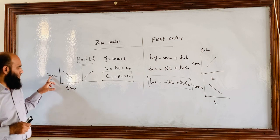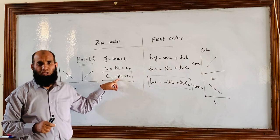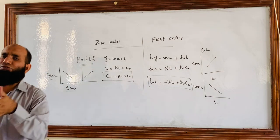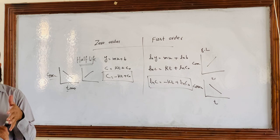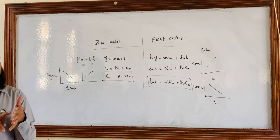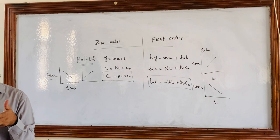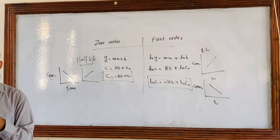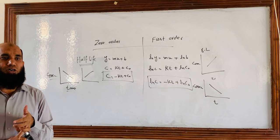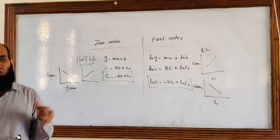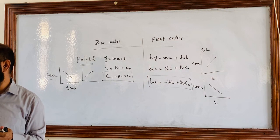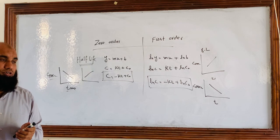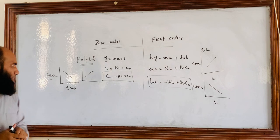Just like half-life, we have the same words for rate constants: elimination rate constant, absorption rate constant, and distribution rate constant. In future classes, we will write KE for elimination rate constant, KD for distribution rate constant, and KM for metabolic rate constant. When we discuss elimination and its rate, we call it elimination rate constant.